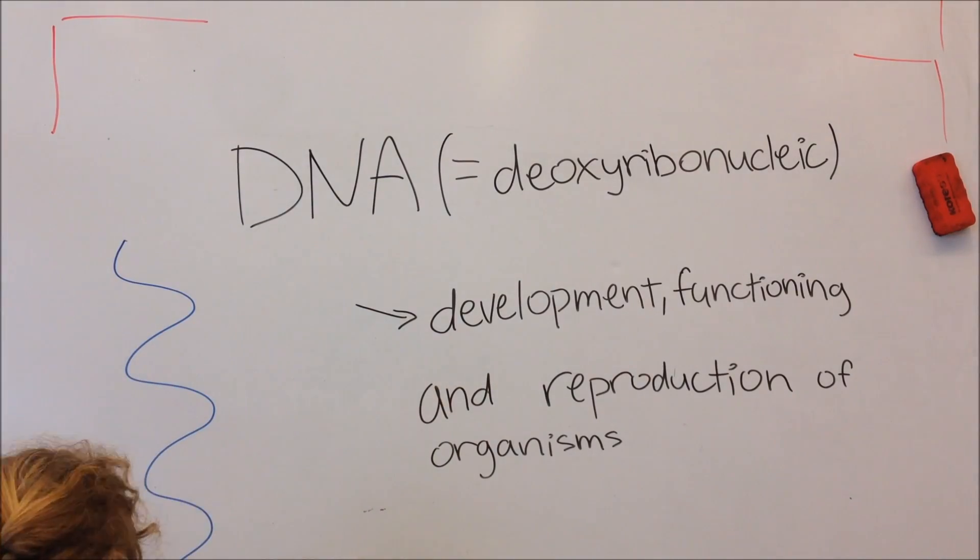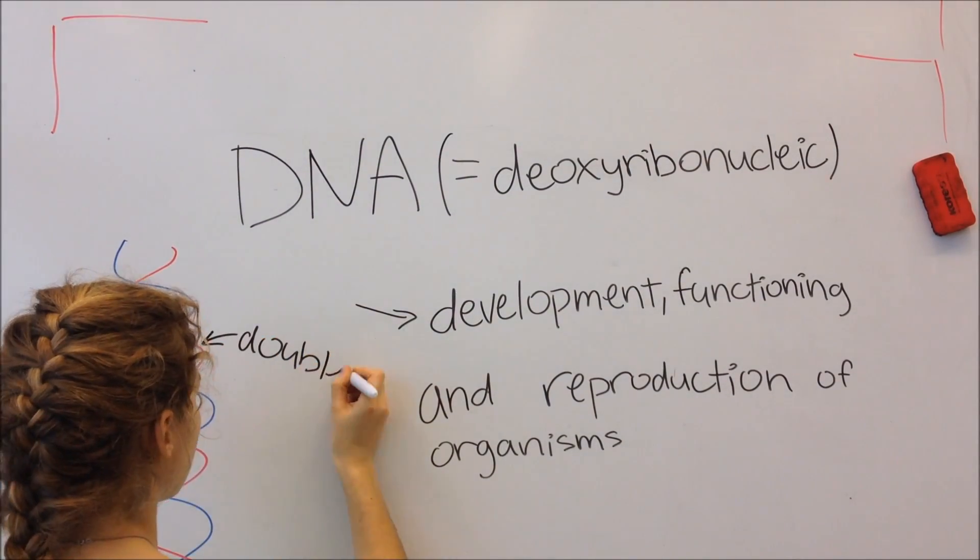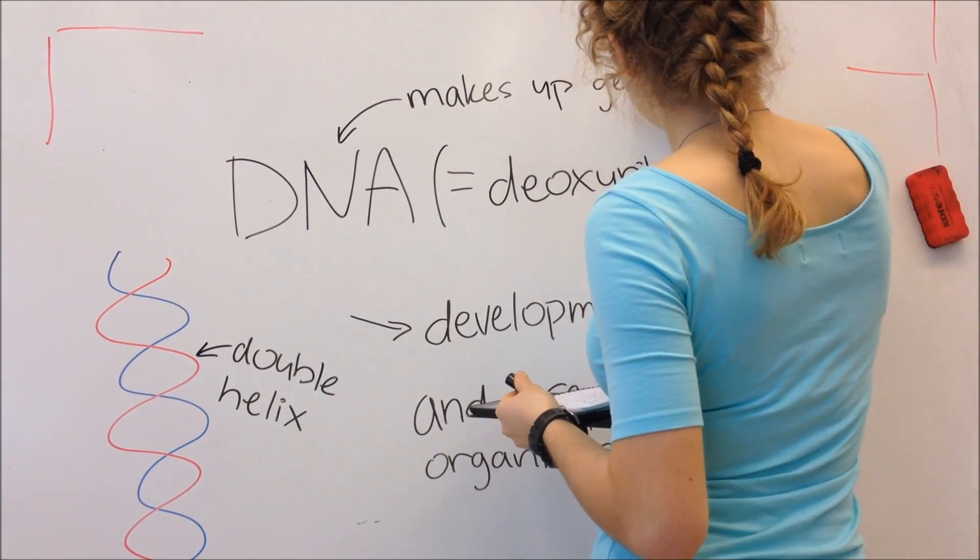DNA consists of two polymer strands that make up the famous double helix. It also makes up genes that are important for the production of proteins.